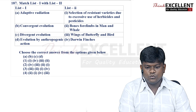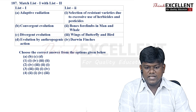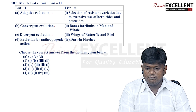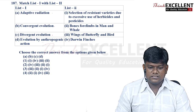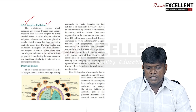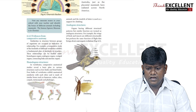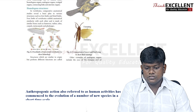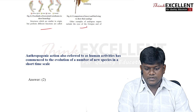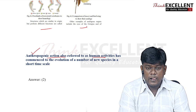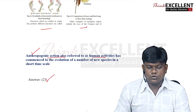Question 187: match list 1 — adaptive radiation, convergent evolution, divergent evolution, evolution by anthropogenic action — with list 2. Adaptive radiation is exemplified by Darwin's finches. Convergent evolution includes wings of butterfly and bird. Divergent evolution includes bones of four limbs in man and whale (homologous structures). Anthropogenic action refers to human activities causing species change, such as selection of resistant varieties due to excess use of herbicides and pesticides. Option 2 is the right answer.